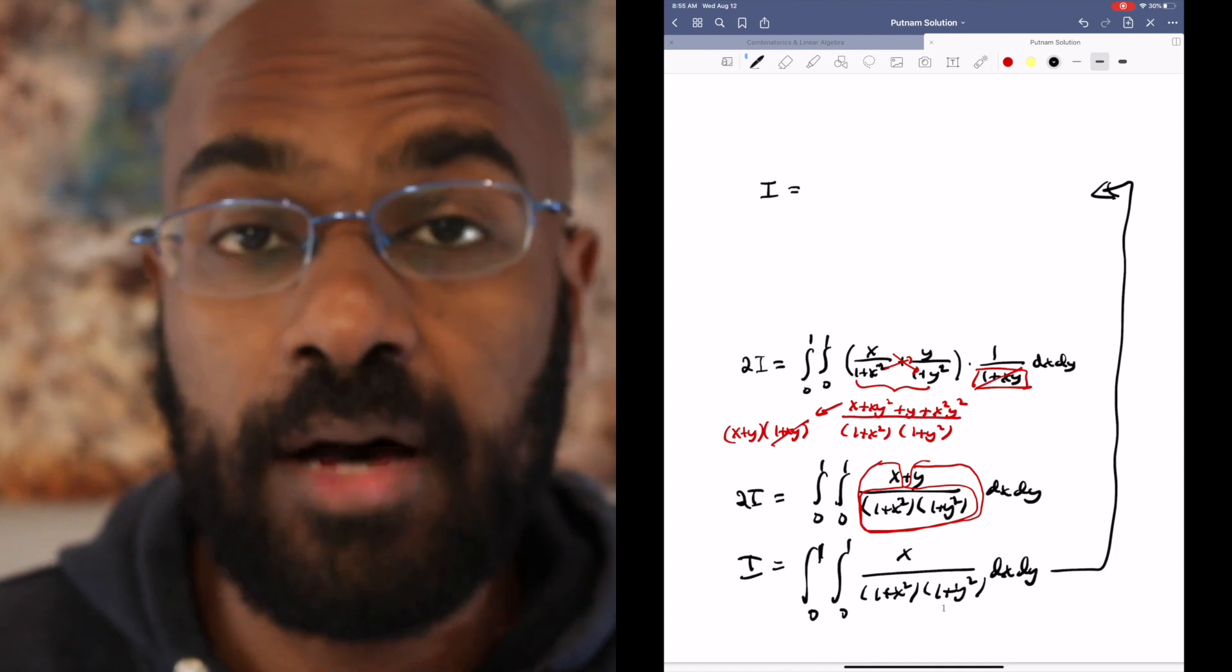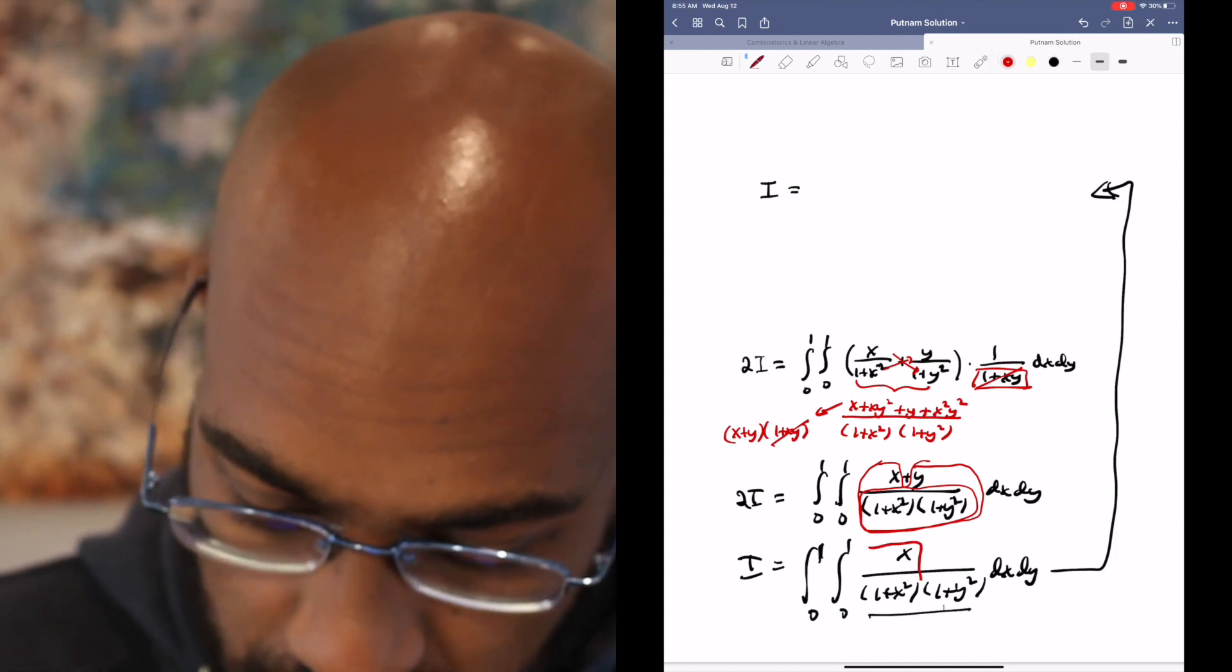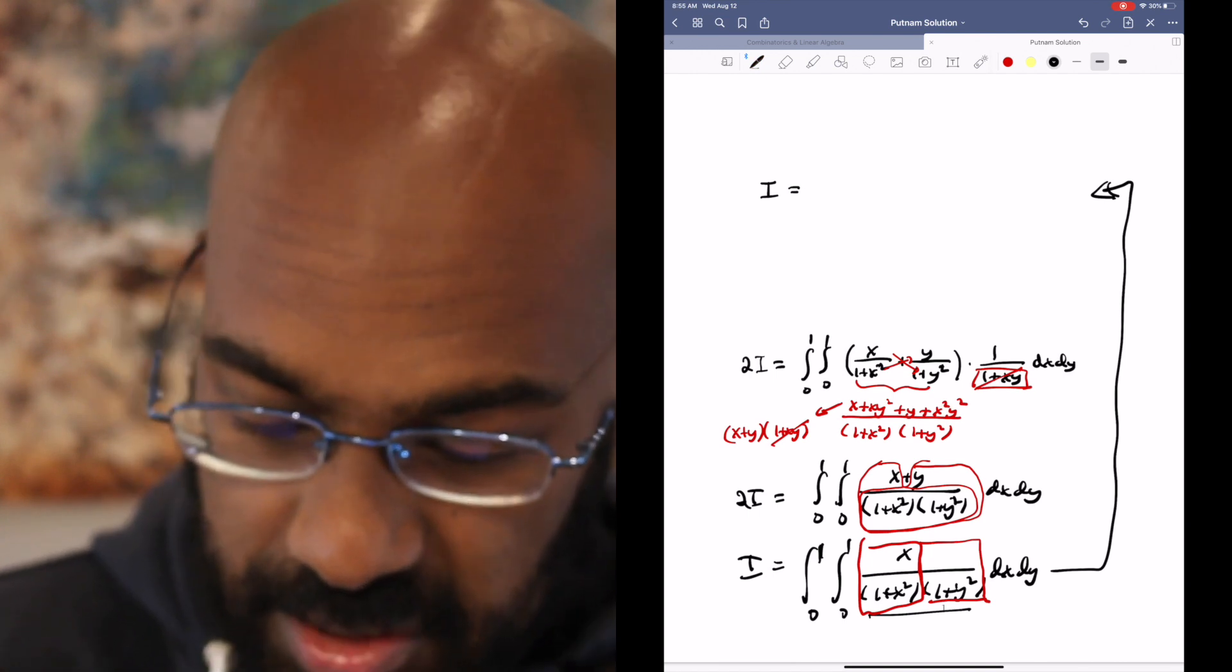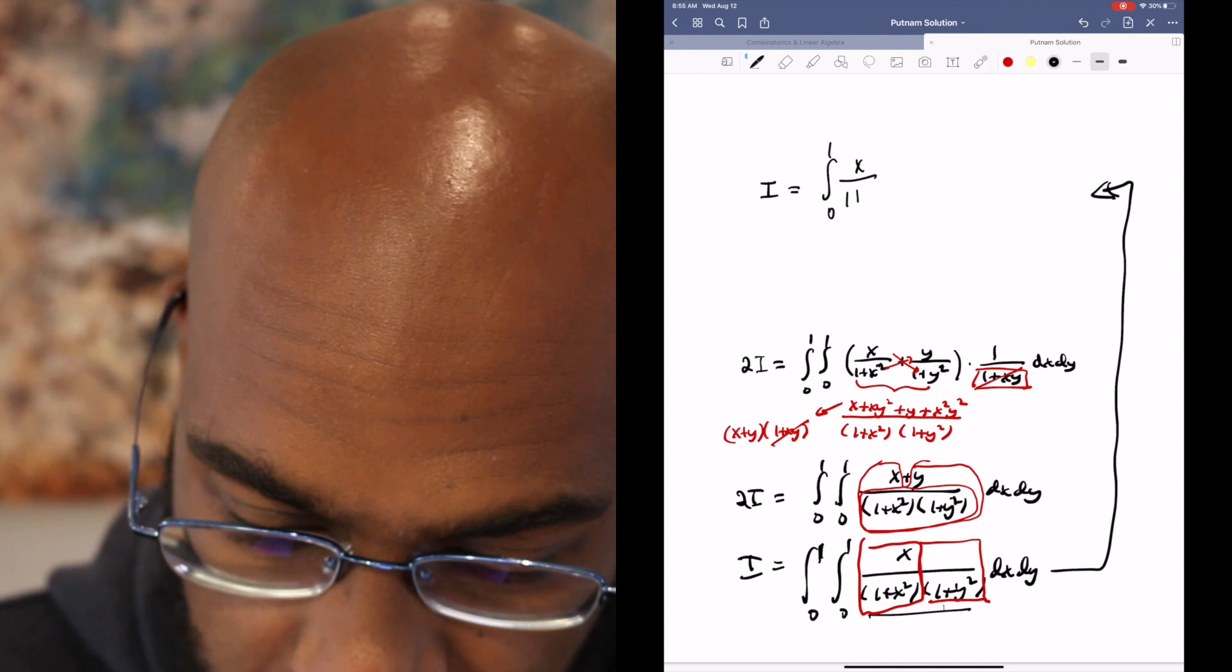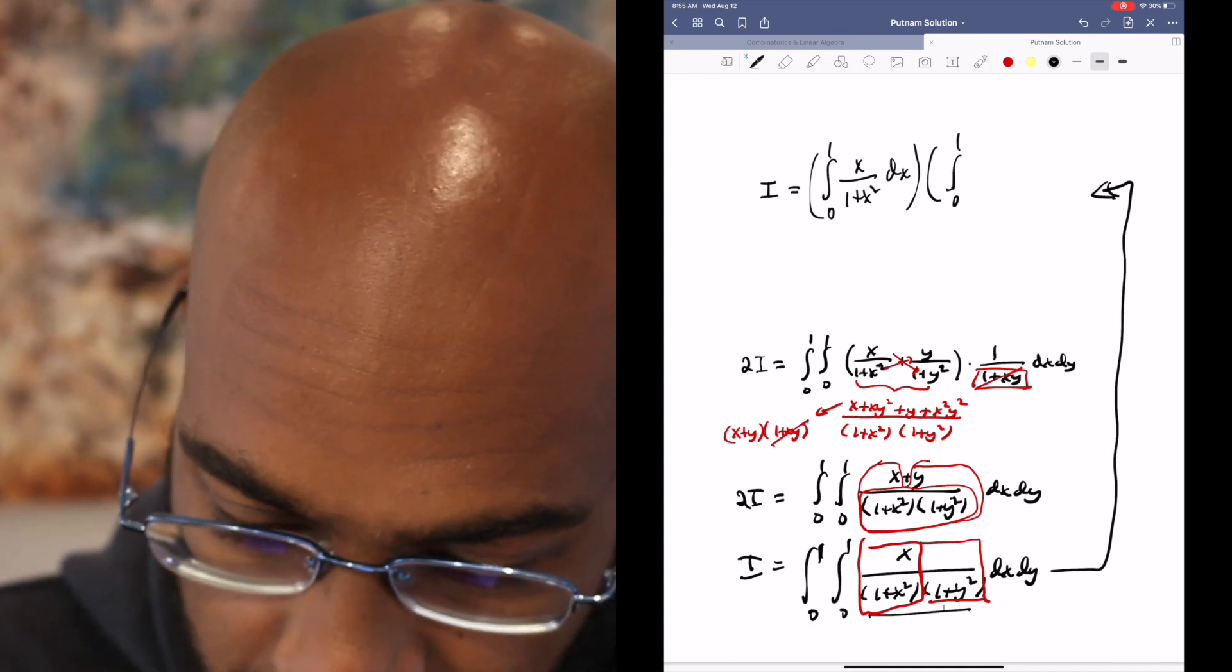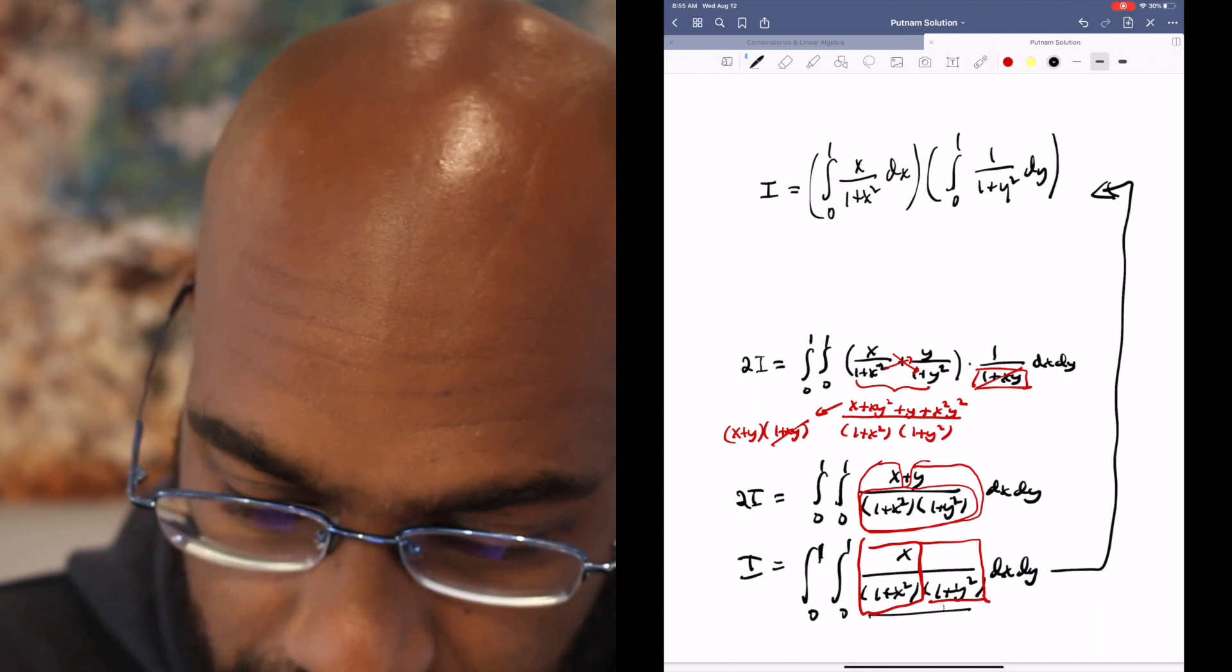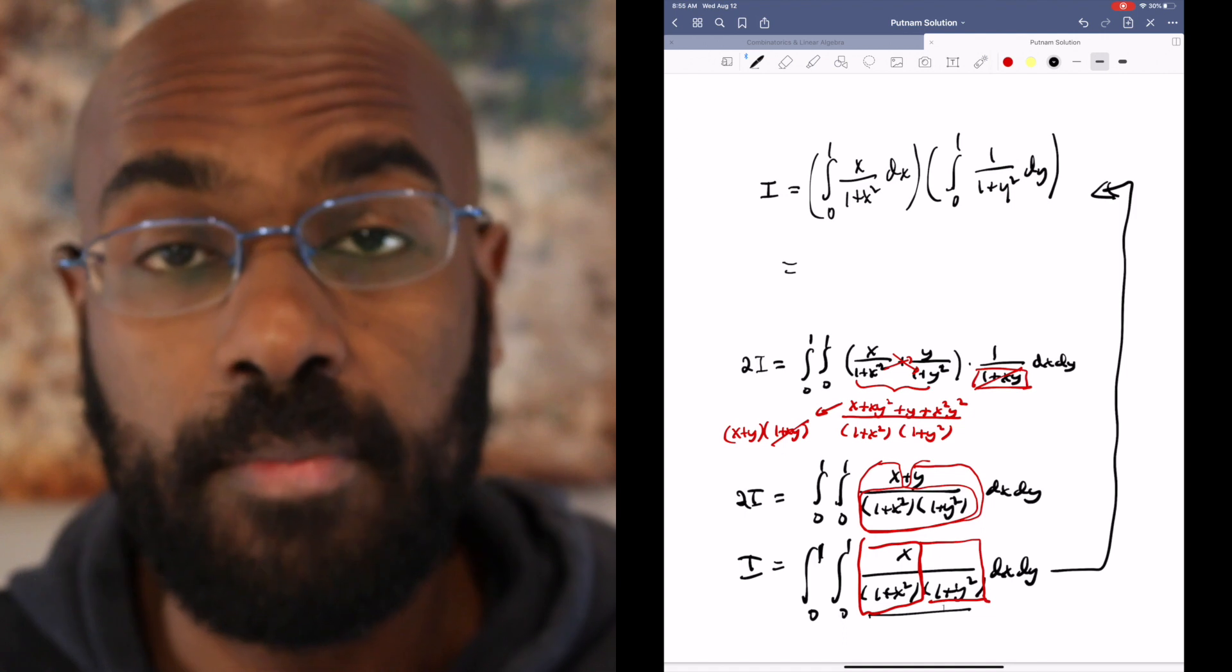The interesting part now is that we have this written as the product of two functions, one in the variable x and one in the variable y, that are independent of each other. So we can write this as a product of two integrals in a single variable: the integral of x over 1 plus x squared dx and the integral of 1 over 1 plus y squared dy. And now we have two integrals that are manageable.